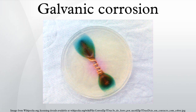Galvanic corrosion is an electrochemical process in which one metal corrodes preferentially to another when both metals are in electrical contact, in the presence of an electrolyte. This same galvanic reaction is exploited in primary batteries to generate an electrical voltage.